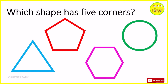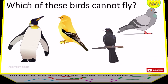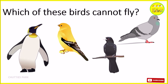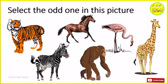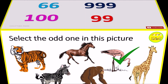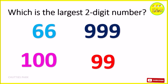Which shape has five corners? Which of these birds cannot fly? Select the odd one in this picture. Which is the largest two digit number?